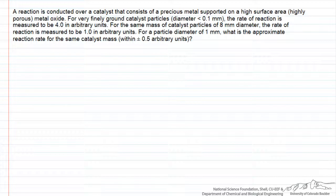The concept here is that the true rate of reaction, or the intrinsic rate, can be related to the rate we actually measure by an internal effectiveness factor. The rate on the right-hand side is the actual kinetic rate at the surface of the catalyst. The rate on the left-hand side, which we would observe in an operating reactor, can be lower than the true rate because of slow diffusion, and that lowering is taken into account by the effectiveness factor.